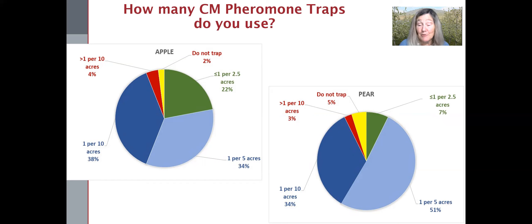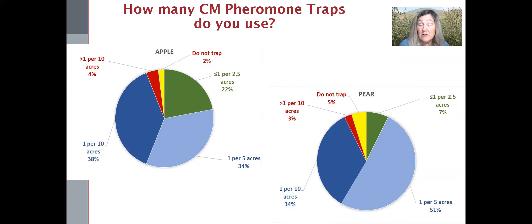which is honestly about what we expected. A very small minority did not trap at all — surprising — or at very low densities. Pear growers were slightly less inclined than apple growers to trap at the recommended density of one trap every two and a half acres. And the 22% rate that traps at the recommended rate is actually pretty good.